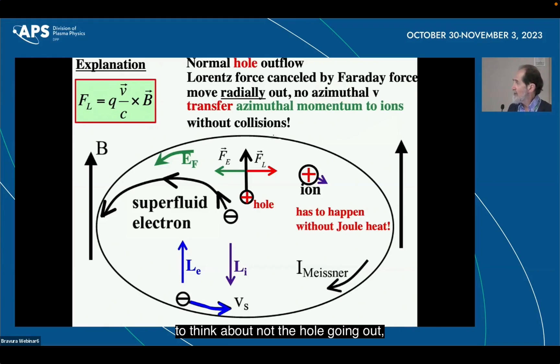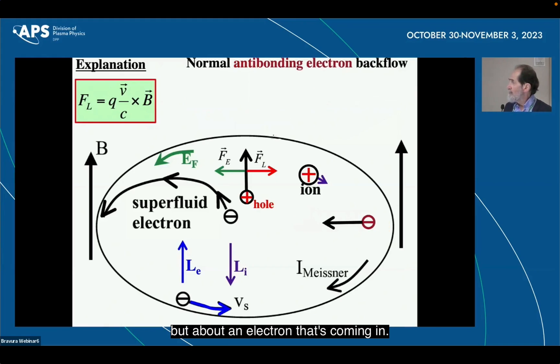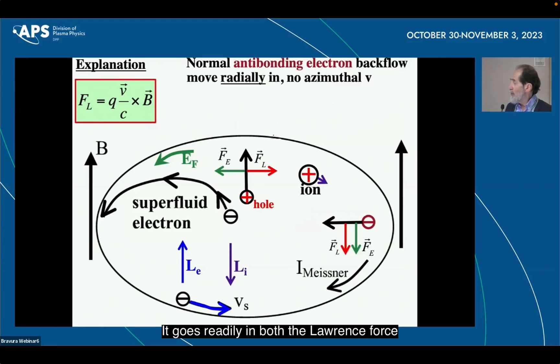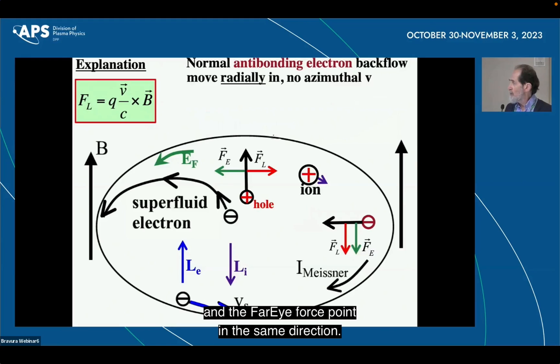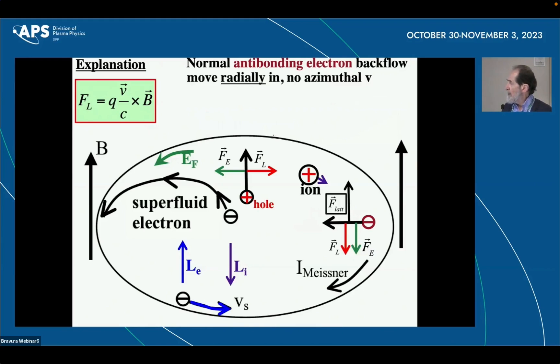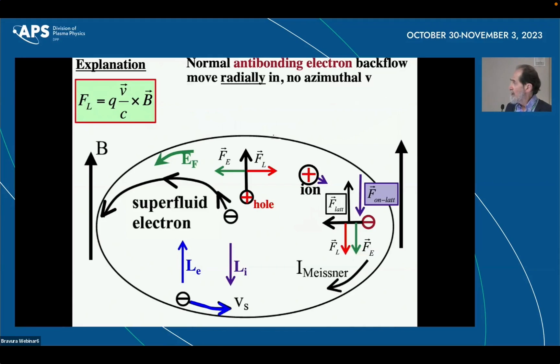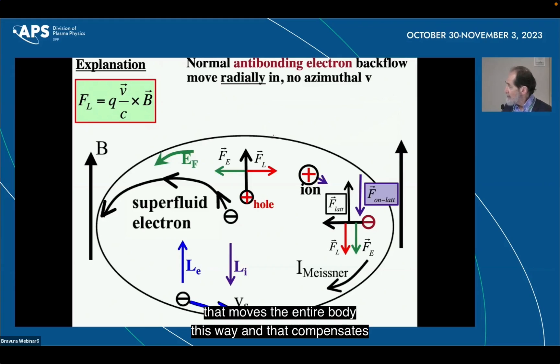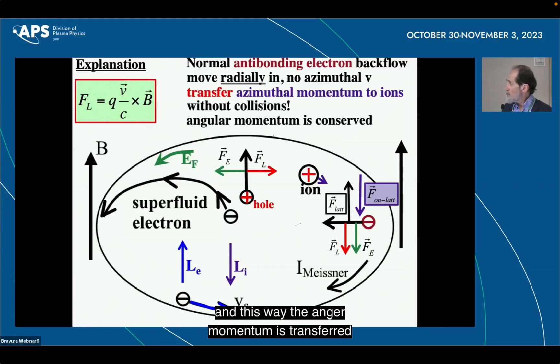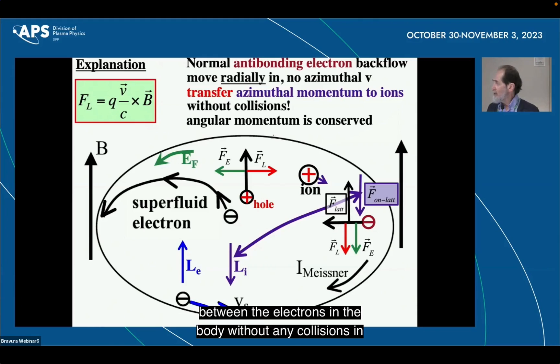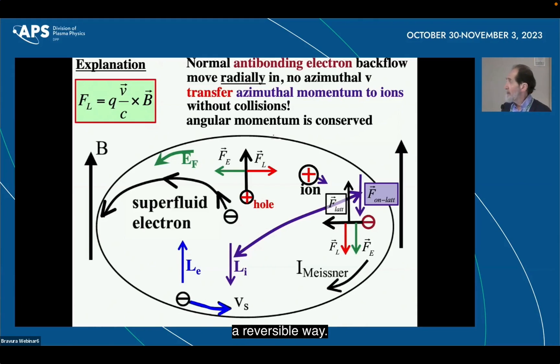So the way to understand it is you need to think about not the hole going out, but about an electron that's coming in. Let me show you how it works. It goes radially in. Both the Lorentz force and the Faraday force point in the same direction. And the reason it goes straight in is because there is a force from the lattice on the electron that compensates these external forces. And by Newton's law, there is a force that is exerted on the lattice that moves the entire body this way and that compensates. And this way, the angular momentum is transferred between the electrons and the body without any collisions in a reversible way.